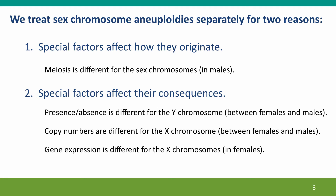We treat sex chromosome aneuploidies separately, partly because of special factors affecting how they originate, as we described in the last lecture, but also because of special factors affecting their phenotypic consequences. Presence-absence factors are different for the Y chromosome, and copy numbers are different for the X chromosome in normal people, and gene expression is different for the X chromosome. All of these factors change the interplay between copy number that we see with autosomal aneuploidies.